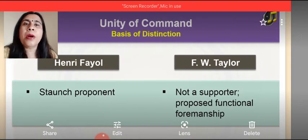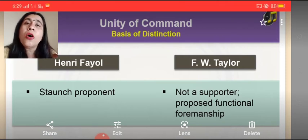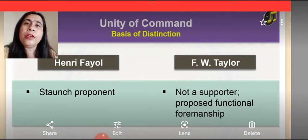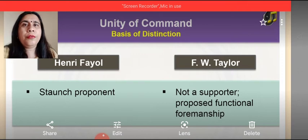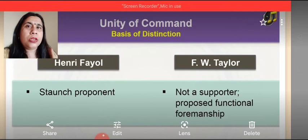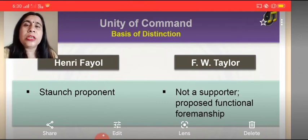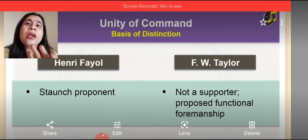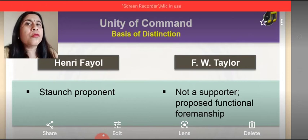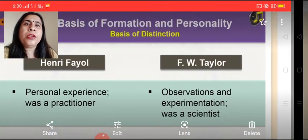Unity of command is given by Henry Fayol. On the other hand, F.W. Taylor gave the technique of functional foremanship, which is completely opposite to Fayol's principle of unity of command. Henry Fayol suggests that there should be one boss over the employees to give orders. F.W. Taylor, on the other hand, suggests that to bring specialization, four planners and four executors should work above the employee — that is eight superiors over one subordinate. So they both are different from each other.